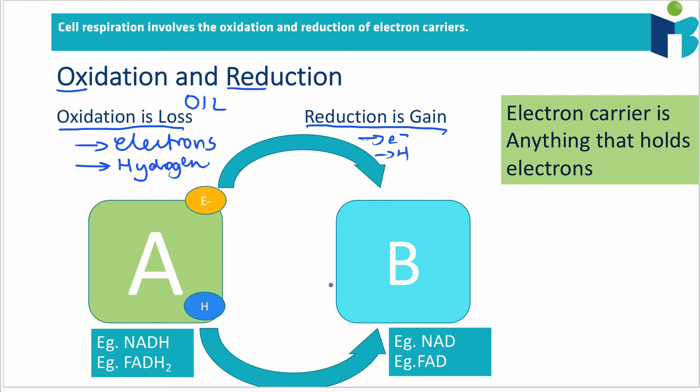What are some examples of these molecules that we're going to see again and again in cell respiration and photosynthesis? Well, in cell respiration, we have molecules like NADH and FADH2. These are what we call electron carriers.